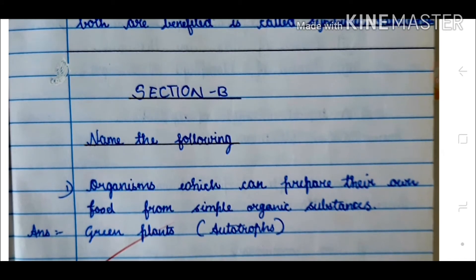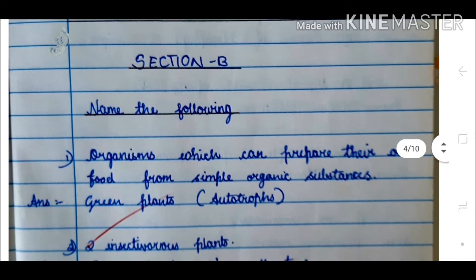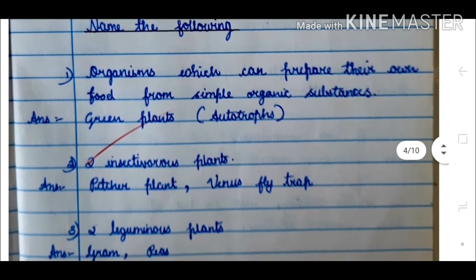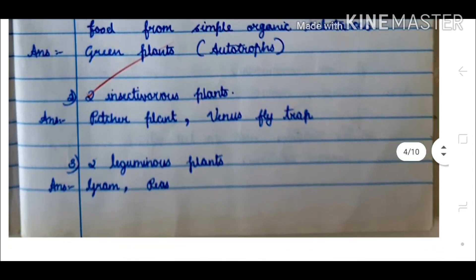Section B: Name the following. 1. Organisms which can prepare their own food from simple inorganic substances — answer: green plants. 2. Two insectivorous plants.